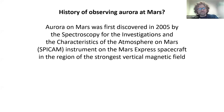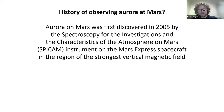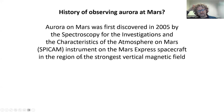Aurora on Mars was first discovered in 2005 — almost 20 years ago — by this instrument with a crazy acronym: Spectroscopy for the Investigation and Characteristics of the Atmosphere of Mars. We just call it SPICAM. This was an ultraviolet instrument orbiting Mars on a spacecraft called Mars Express, a mission launched by the European Space Agency that is still orbiting Mars and still taking data.